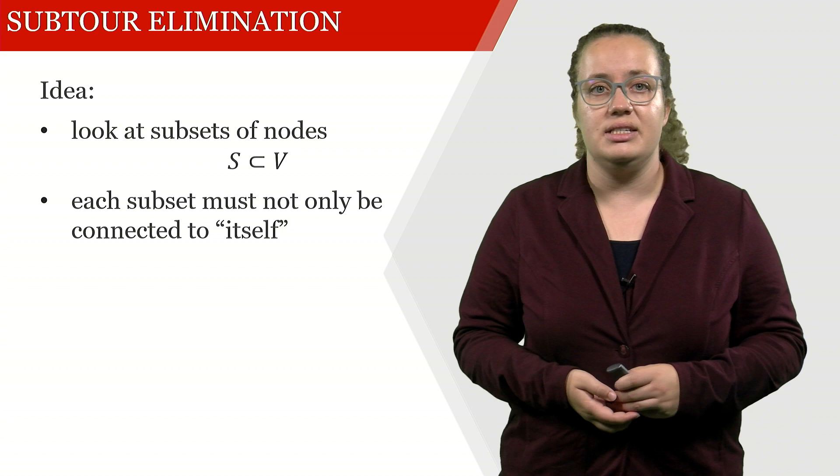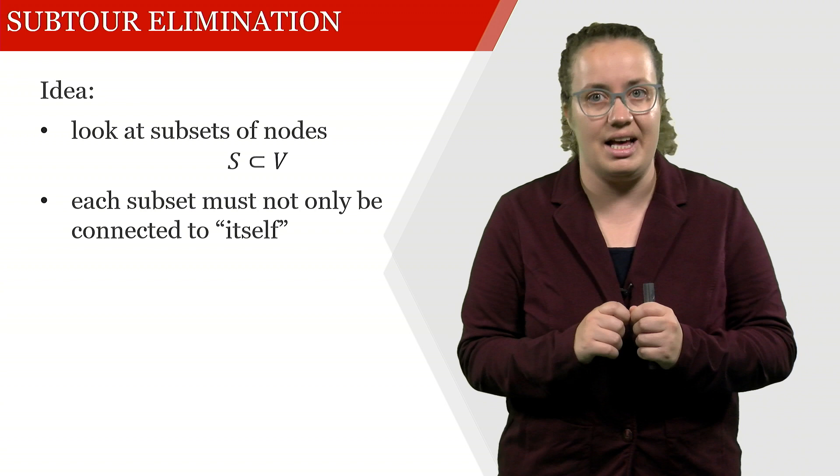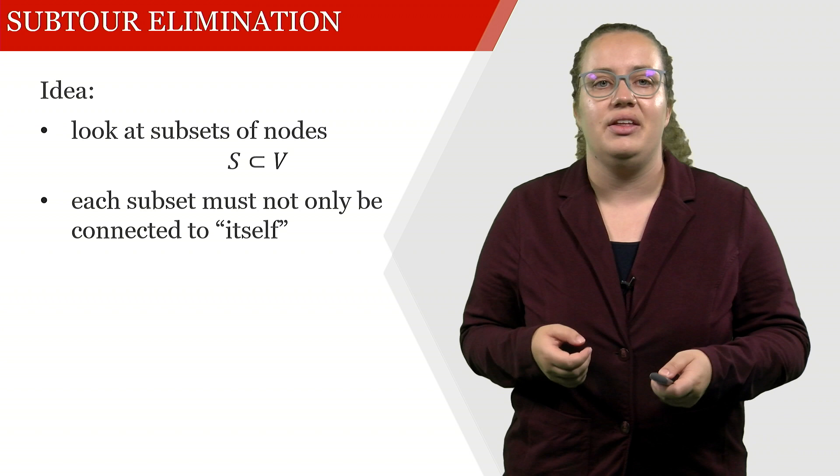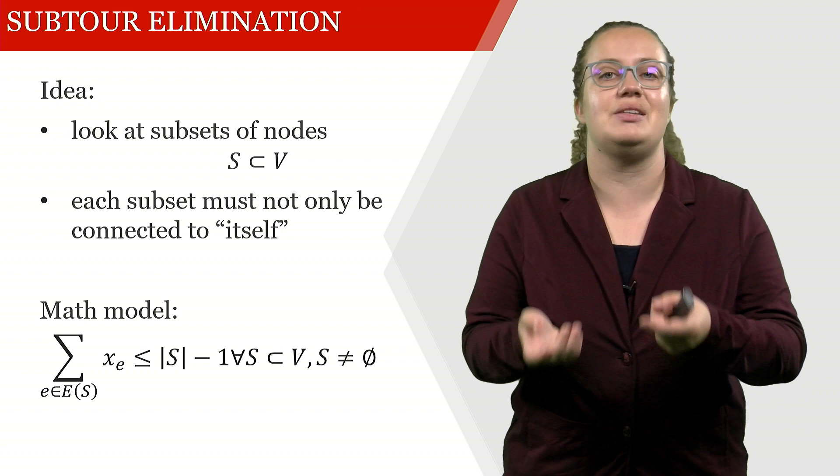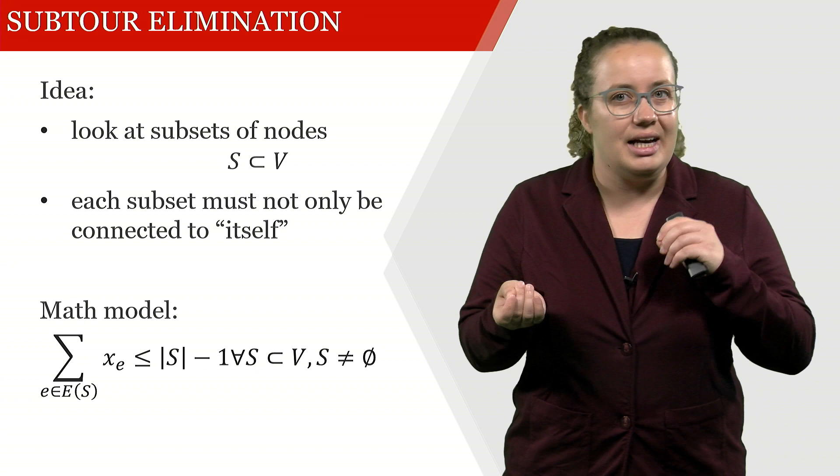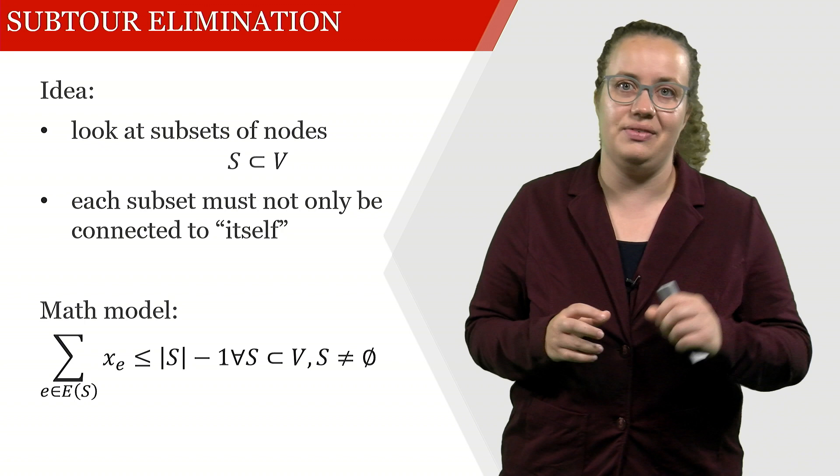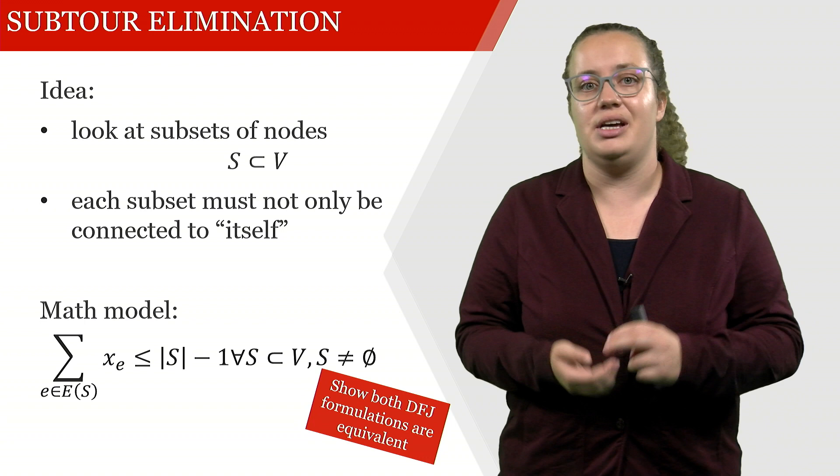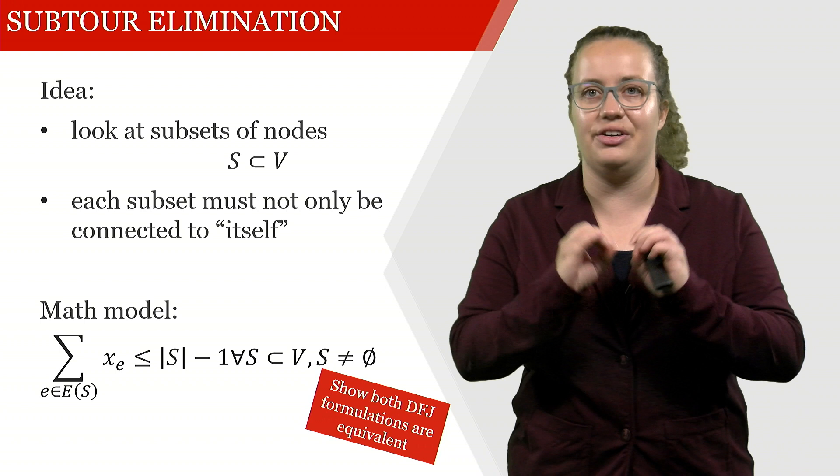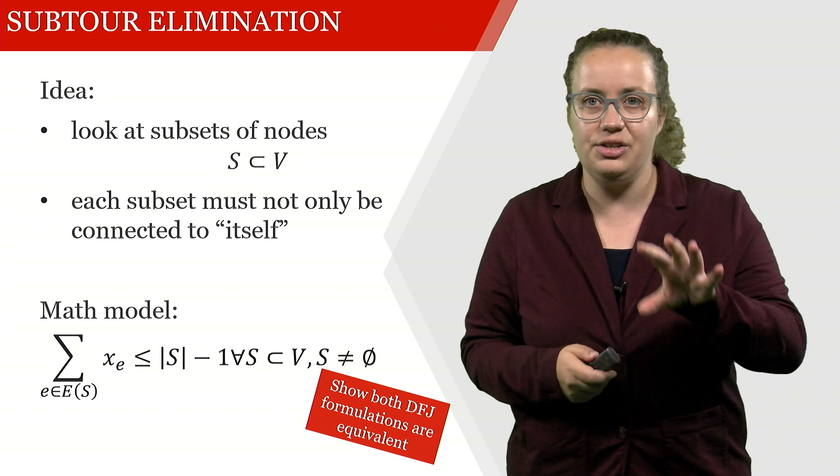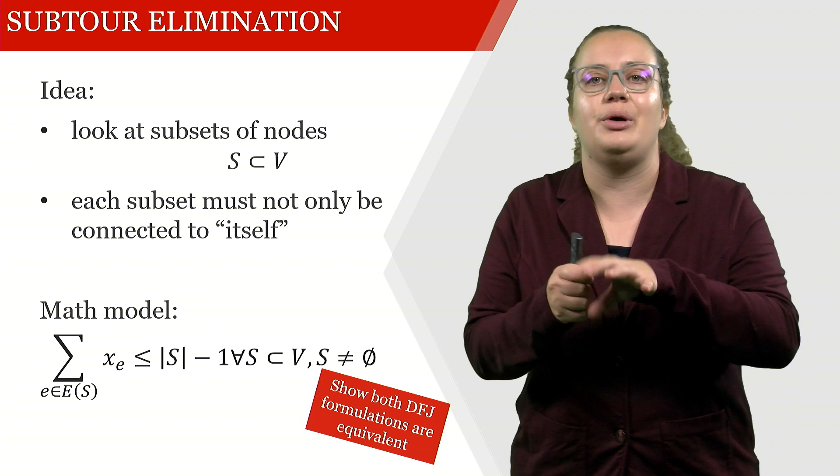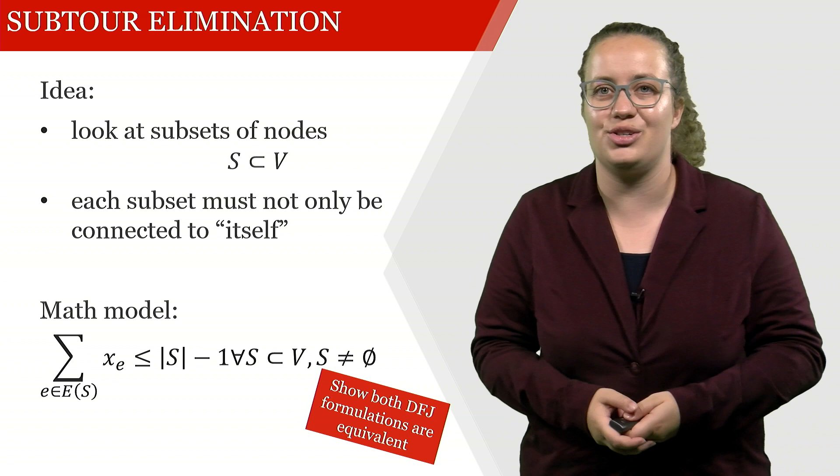We have one alternative way of formulating this and this is that each subset must not only be connected to itself. If you think about it, then this means that the number of edges or arcs within a subset has to be the number of nodes within this minus 1 at most. This is the one that is slightly more difficult to understand, but it also models exactly the same thing as the previous mathematical models that we've seen. What you can now do is show that these two completely different DFJ formulations are actually equivalent. Those two are equivalent and I would be interested in seeing your solutions why they are equivalent.